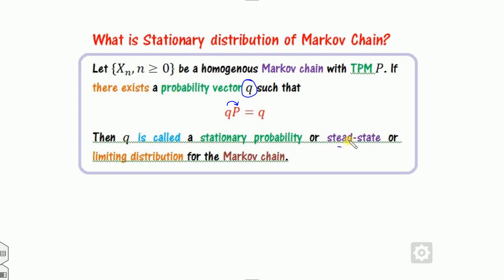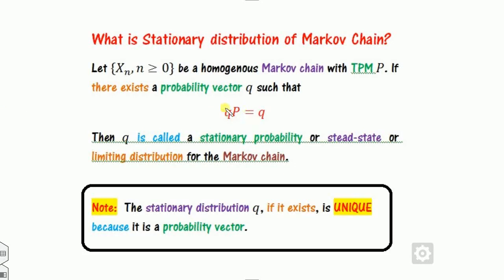It is also known as the steady state or the limiting distribution of P. This means that as the limit n approaches infinity, P raised to the power n becomes a capital Q. That capital Q is called the steady state probability distribution. If it exists, it is always unique because it is a probability vector — each component k_i is greater than or equal to 0 and the sum equals 1.